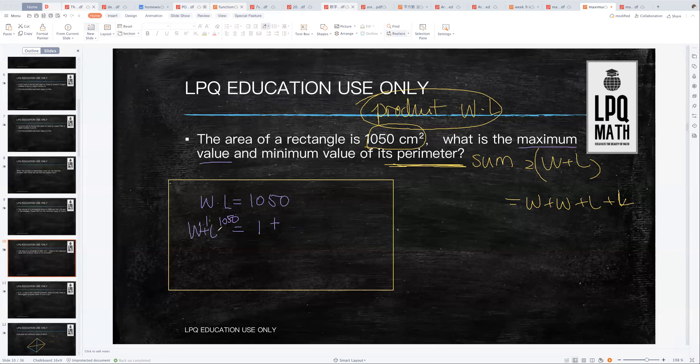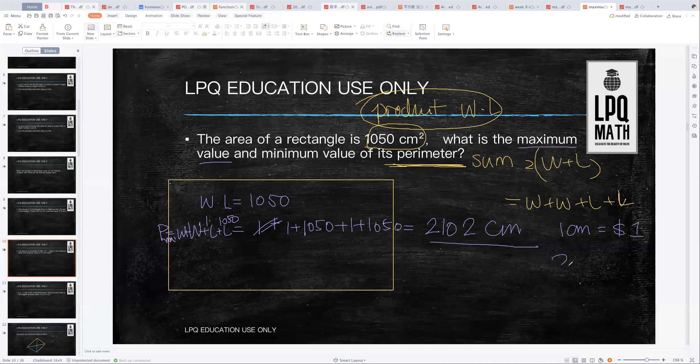So the answer will be 1 plus 1050 plus 1 plus 1050. The maximum value of the perimeter is 2102 centimeters. You're going to use that much material. If one centimeter costs you one dollar, that means you have to spend 2102 dollars.